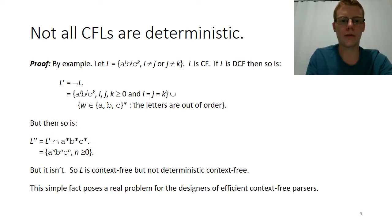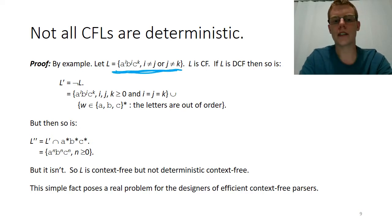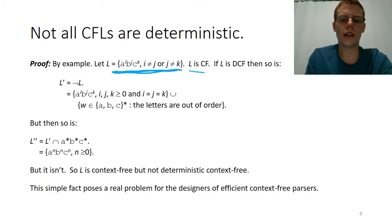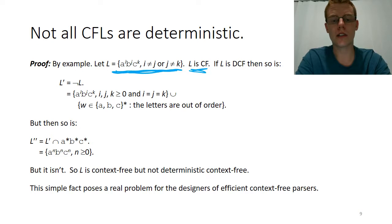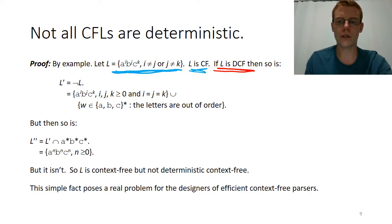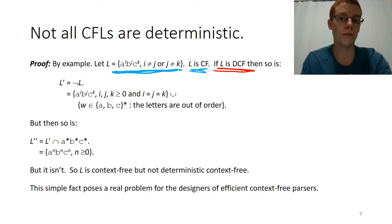Our proof that not all context-free languages are deterministic: the easy way is to provide an example of a context-free language which is not a deterministic context-free language. This is our counterexample: the set of strings made of A's followed by B's followed by C's, where either the number of A's and B's are not equal, or the number of B's and C's are not equal. We show in class that we can build a pushdown automata to accept this language, so L is definitely context-free. Our assumption is that L is deterministic context-free.